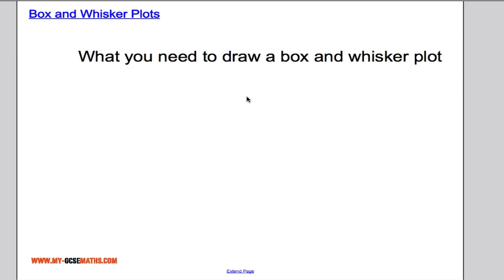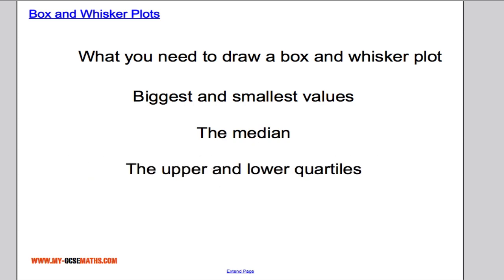So the key information that we need in order to draw a box and whisker plot: we need the biggest and smallest values, we need the median and the upper and lower quartiles.